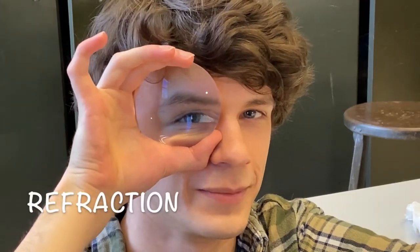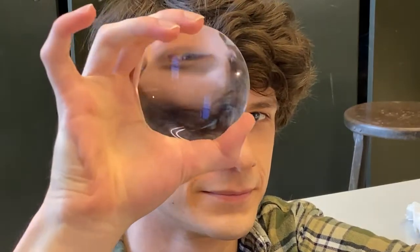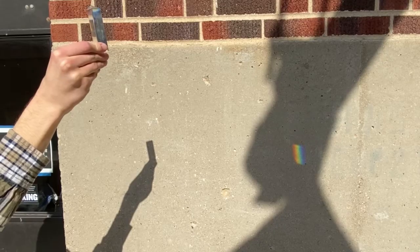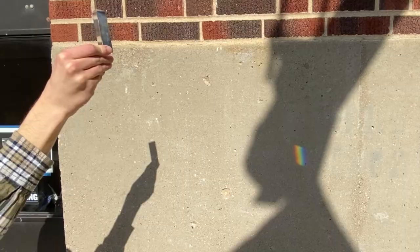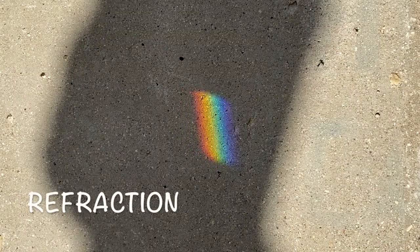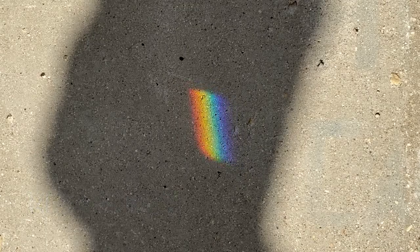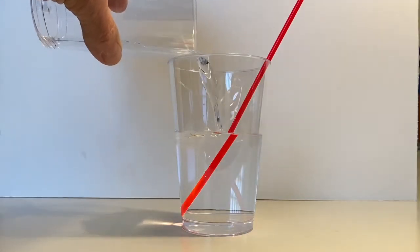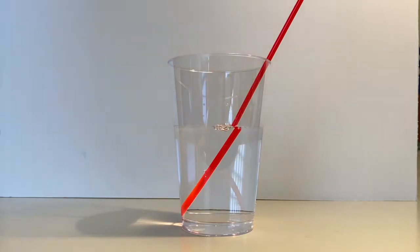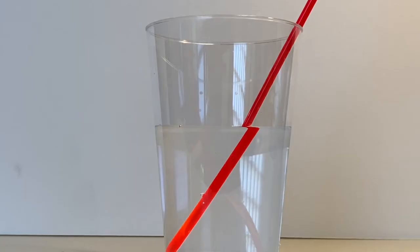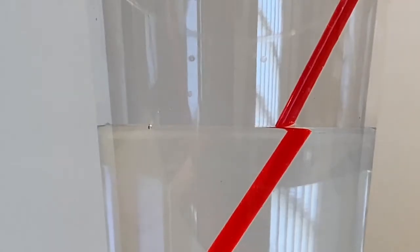Refraction is one property of light that you might be familiar with. A rainbow is one example. When white light passes through a transparent material like a prism, the different colors can be refracted or bent by a different amount. Refraction also causes a straw to appear bent in a glass of water. The water and glass are acting like a lens which changes the path of the light rays as they travel to your eye.